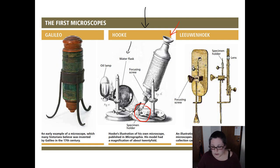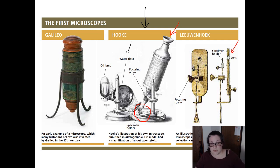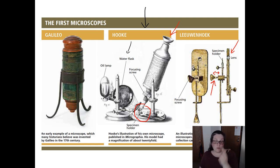Van Leeuwenhoek could magnify things more than 200 times and found that the smaller the lens, the higher the magnification. He used really high quality glass and talented lens grinders to achieve this. He could focus by moving a screw in and out, which moved the specimen — placed on the end of a needle — back and forth.